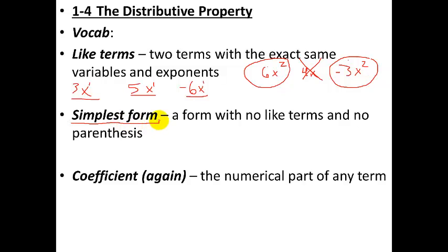Okay, simplest form. This is just what it sounds like. You've essentially combined everything together as much as possible. So if there are two like terms that are not yet combined together, you have combined them. So there are no like terms left over, and there are also no parentheses. So when you want to reduce something to simplest form, if there are parentheses, you need to distribute, which is kind of what this lesson is going to be about.